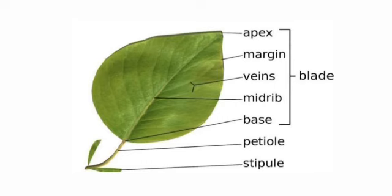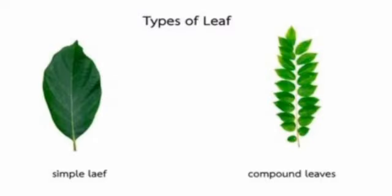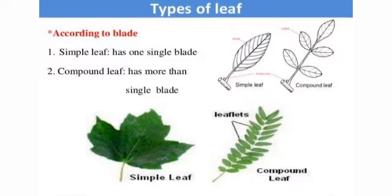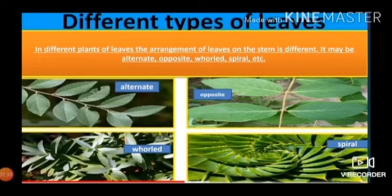Stipules are small leaf-like structures that may be present near the leaf base. There are two types of leaves: compound leaves and simple leaves. In compound leaves, the leaf blade is divided into many small parts called leaflets; examples include coriander and the mimosa plant. Simple leaves have a single undivided leaf blade and a single midrib; examples include guava, mango, and eucalyptus.